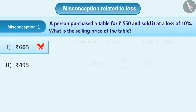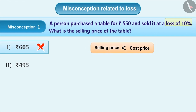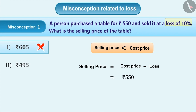The correct understanding is that selling price can be lower than the cost price. In the given example, loss is given. That means selling price is less than cost price. So by subtracting loss from cost price, we obtain the selling price. Therefore, selling price is equal to 550 minus 55, which is equal to Rs. 495. So the correct answer is option 2.